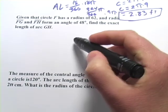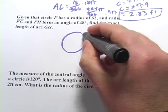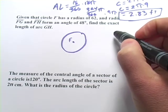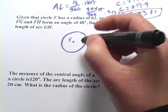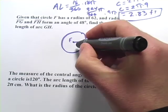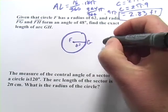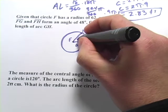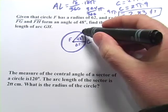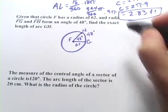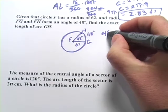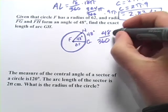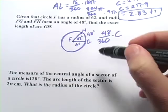This one says given that circle F has a radius of 62. Okay, let's go ahead and draw that circle F. Circles are named after their center points, so there's point F. Has a radius of 62, and radii FG, so there's FG with a radius of 62, call that G and FH. Form an angle of 48 degrees. So here's our central angle of 48 degrees. That means this arc is going to have an arc length of 48 degrees, so that means it is 48/360 of this circle, and that's the factor we're going to multiply by the whole circumference to figure out the length of that arc.